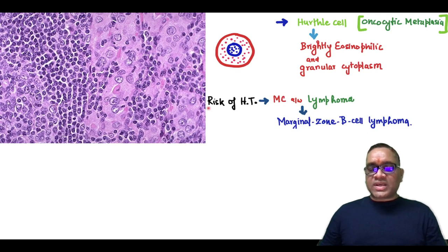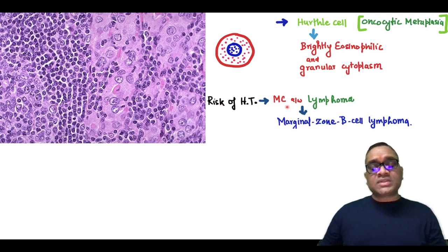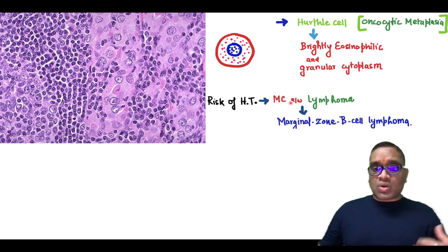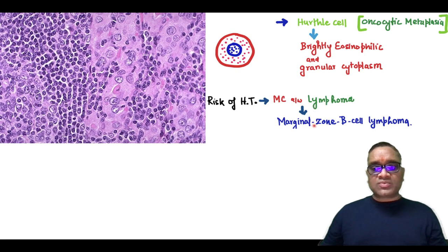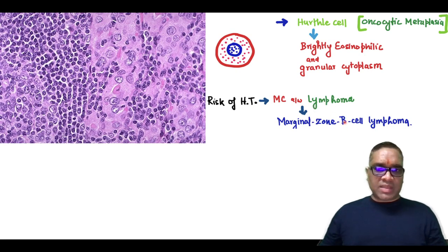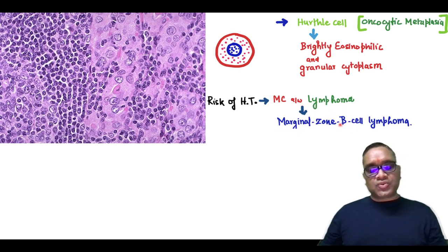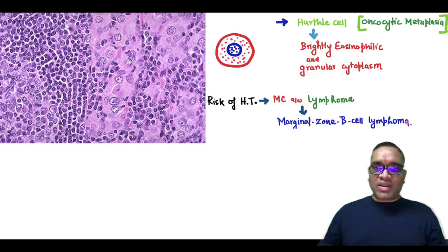The risk of Hashimoto thyroiditis is that it is most commonly associated with lymphoma transformation, specifically the B cell type — marginal zone B cell lymphoma. Enjoy learning and best wishes for your exams.